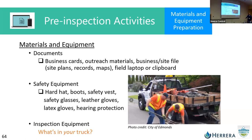Now for materials and equipment: you have your SOPs, you've introduced yourself internally, you've got your form and your inventory, and you're heading out. You can bring your documents — business cards, outreach materials, files, maps, records, maybe a clipboard. For safety equipment: your usual public works and public health gear — hard hat, boots, safety vest, leather gloves, latex gloves if needed, and hearing protection if you're in a manufacturing or industrial area.